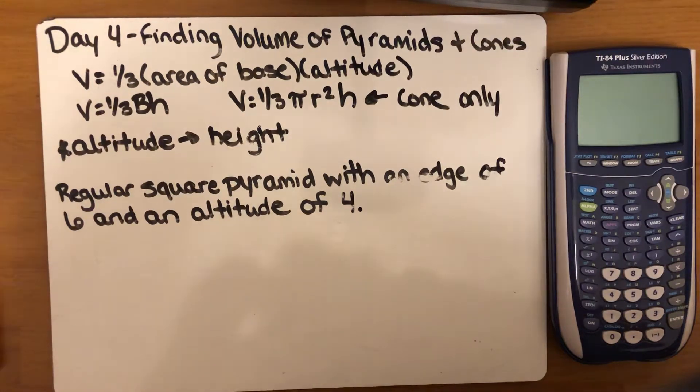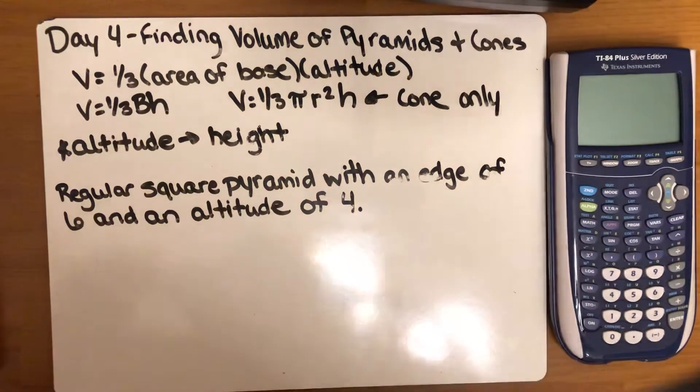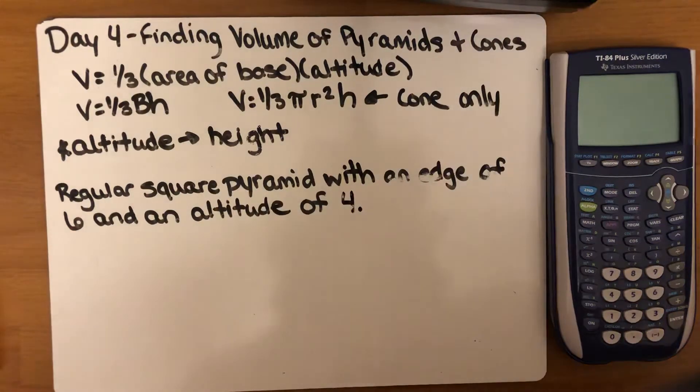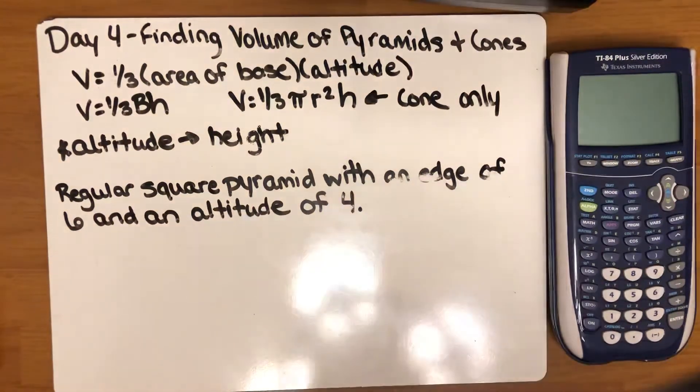Finding the volume of pyramids and cones. The formula for finding the volume of a three-dimensional solid, when it's a pyramid or a cone, is one-third times the area of the base times the altitude.